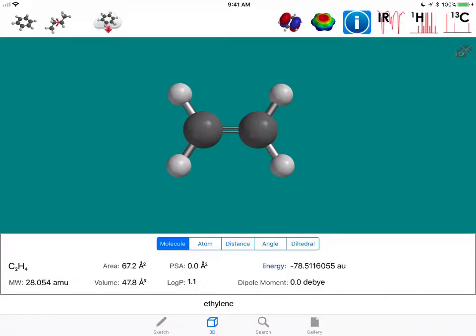So ethylene has the molecular formula C2H4, meaning that it has one degree of unsaturation, that being the pi bond.